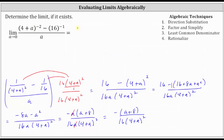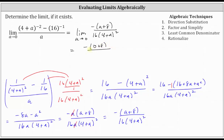So now the original limit is equal to the limit of the opposite of the quantity a plus eight, divided by the product of 16 and the square of four plus a. In this form, we can determine the limit by performing direct substitution. Substituting zero for a, we have the opposite of the quantity zero plus eight, all divided by 16 times the square of four plus zero, which equals negative eight divided by 16 times 16, which is 256. This simplifies to negative 1/32.